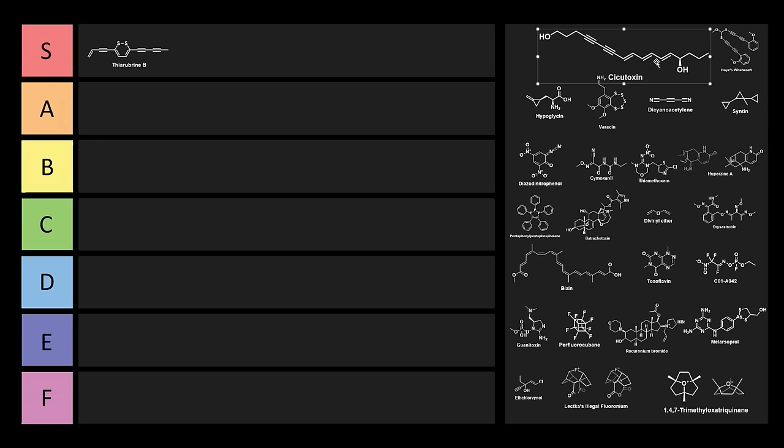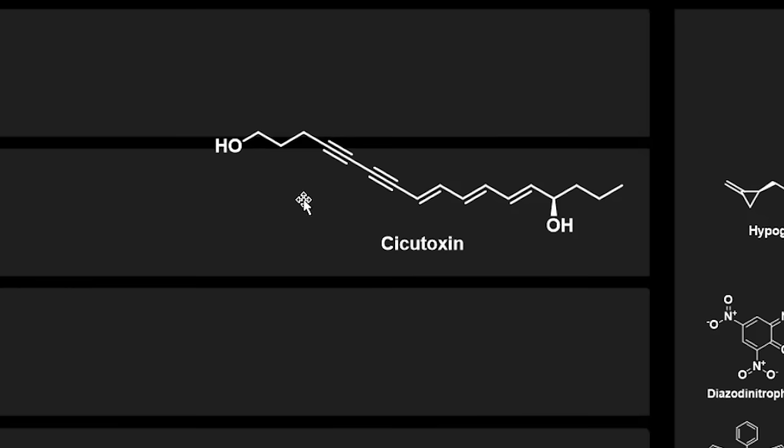Next, we have Sicutoxin. Sicutoxin is this crazy super-conjugated molecule. This is literally just one linear chain of carbon, but it's got two triple bonds and three double bonds all in a row.